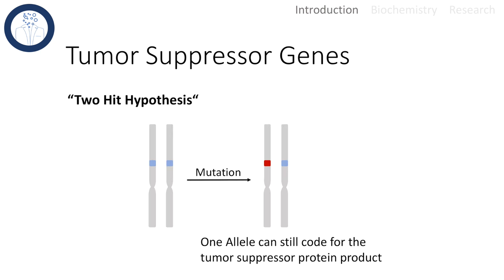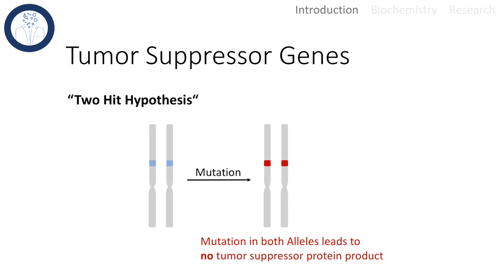When talking about tumor suppressor genes, we also have to introduce the two-hit hypothesis. In a diploid organism, usually both alleles can code for the tumor suppressor product. If one of the genes loses its function, there is still one allele that can code for these proteins to keep the normal function up. That means only a mutation in both alleles leads to no tumor suppressor protein product.